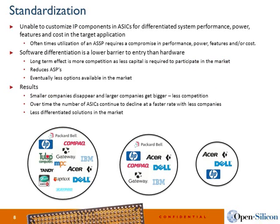Standardization is something we've seen in the past, and software is one way to get there. A great example is the PC industry. If you go back 20 years ago, there were dozens and dozens of PC companies. But the moment Microsoft and Intel standardized everything that goes into a computer, those companies dwindled — and then further dwindled by being purchased by each other. Today we basically have three big guys, and you can see the margin and revenue erosion because they are unable to differentiate against each other.